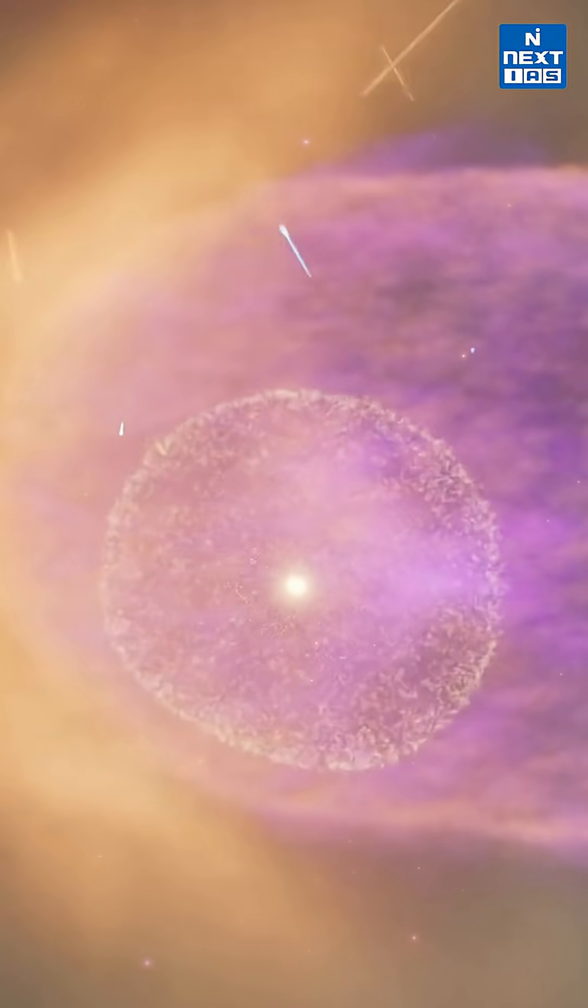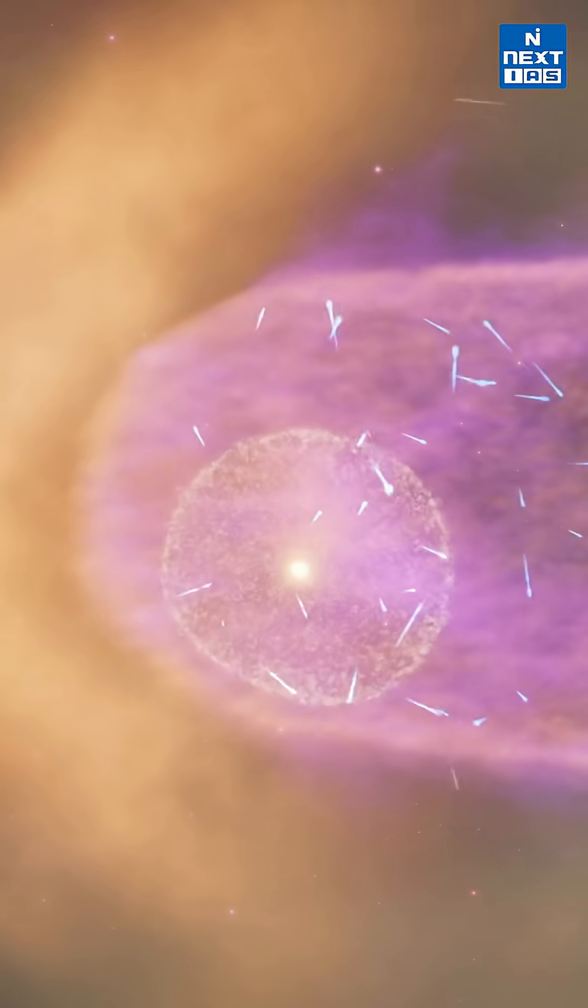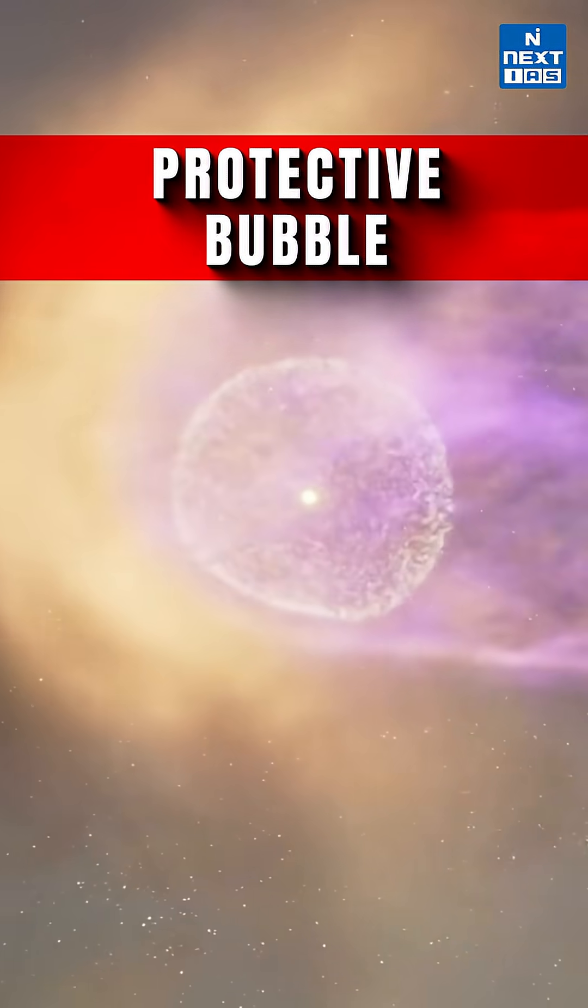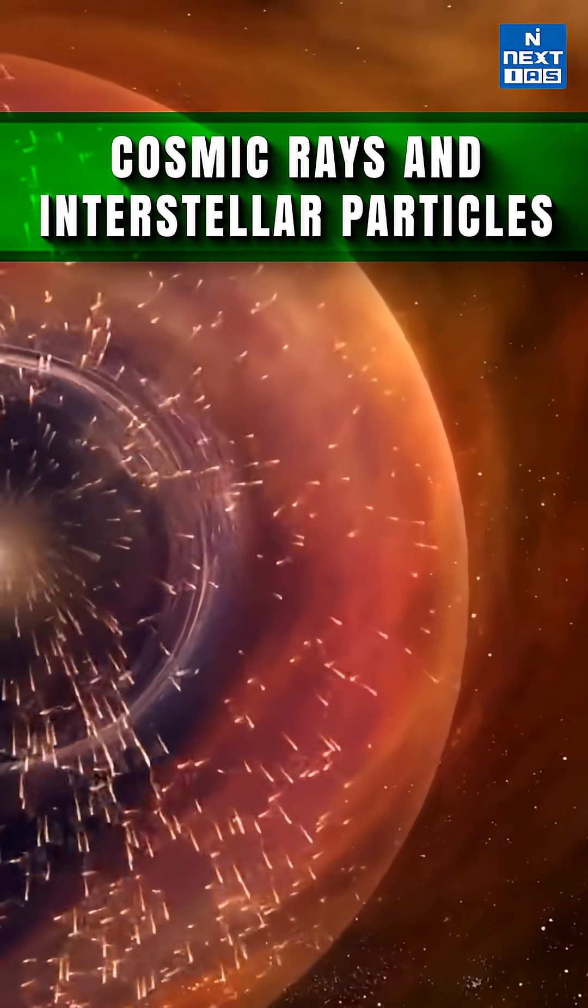The heliosphere is a sort of imaginary region, a vast region around the solar system. It acts like a protective bubble around the solar system which shields the planet from cosmic rays and interstellar particles.